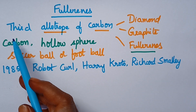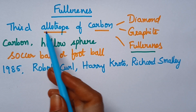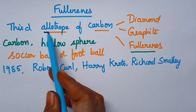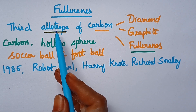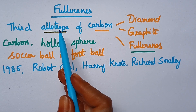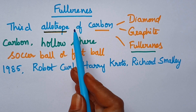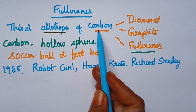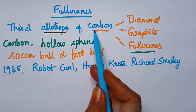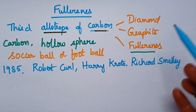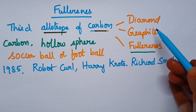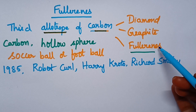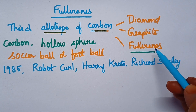Fullerenes can be considered as the third allotrope of carbon. Allotrope means different forms of an element. Carbon has three allotropes — one being diamond, the second is graphite, and the third is fullerenes.